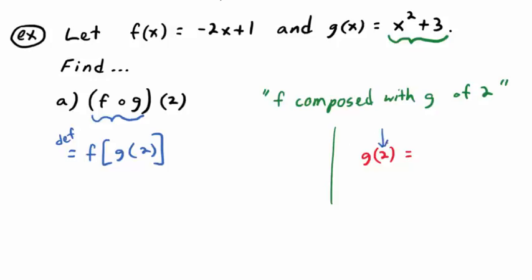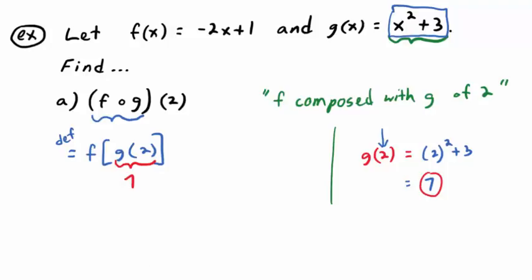Wherever you see an x in the formula for g, which is x squared plus 3, wherever you see that x, plug in a 2 instead. So it becomes 2 squared plus 3, which is 7 — 4 plus 3 is 7. So we're going to work this problem from the inside out and replace that g of 2 with what it's equal to: it's 7. So f of g of 2 is just f of 7.